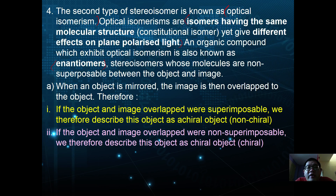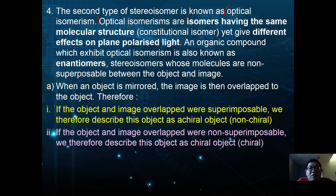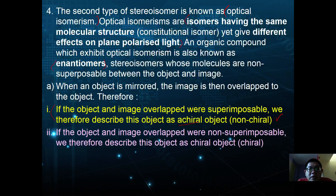An enantiomer is a type of stereoisomer whose molecules are non-superimposable between the object and image. When an object is mirrored and the image overlaps the object, they are superimposable — we define that as a non-chiral object. If the object and image do not overlap, they are non-superimposable, and we say that is a chiral object.